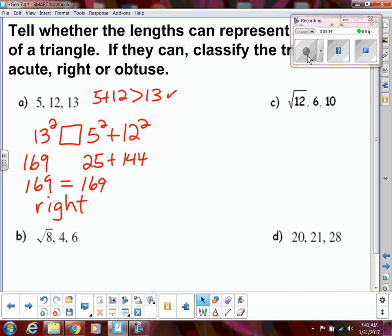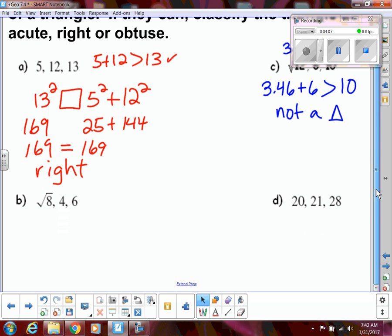All right, so now let's do this again. And since this one is a square root, let's go ahead and get the decimal approximation so we can figure out if that's going to be a triangle or not. So, these are the two smaller sides. So, 2.83 plus 4 needs to be greater than 6. So, obviously, that's not going to be bigger. So, this is not even a triangle. So, there's no need to go any further. I can't classify a triangle if it's not even a triangle.